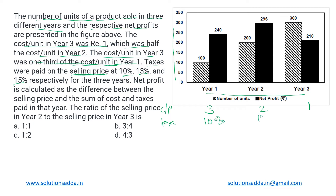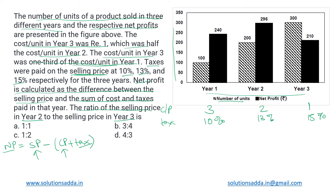The net profit is calculated as the difference between selling price and the sum of cost price and taxes. This net profit is already given in the bar graph. We need to calculate the ratio of selling price in year two to year three. The tax is calculated on the selling price itself, so that is also unknown, while the cost price can be calculated from the bar graph — the number of units are shown by the shaded portion.